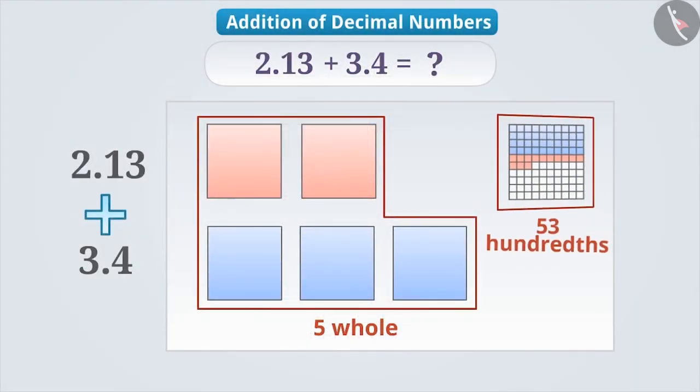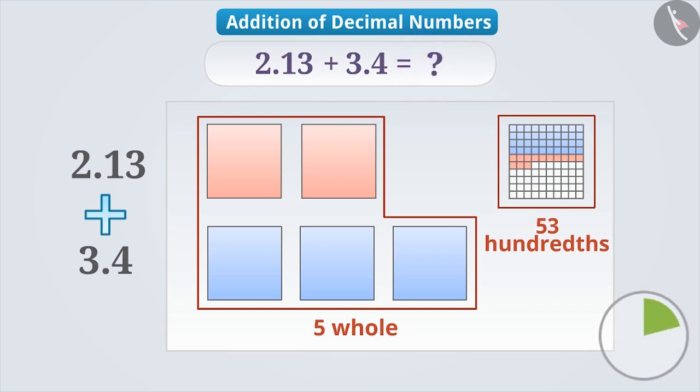Now tell me how do you write five wholes and 53 hundredths in decimal form? Think for a while. Absolutely correct. We write it as 5.53.